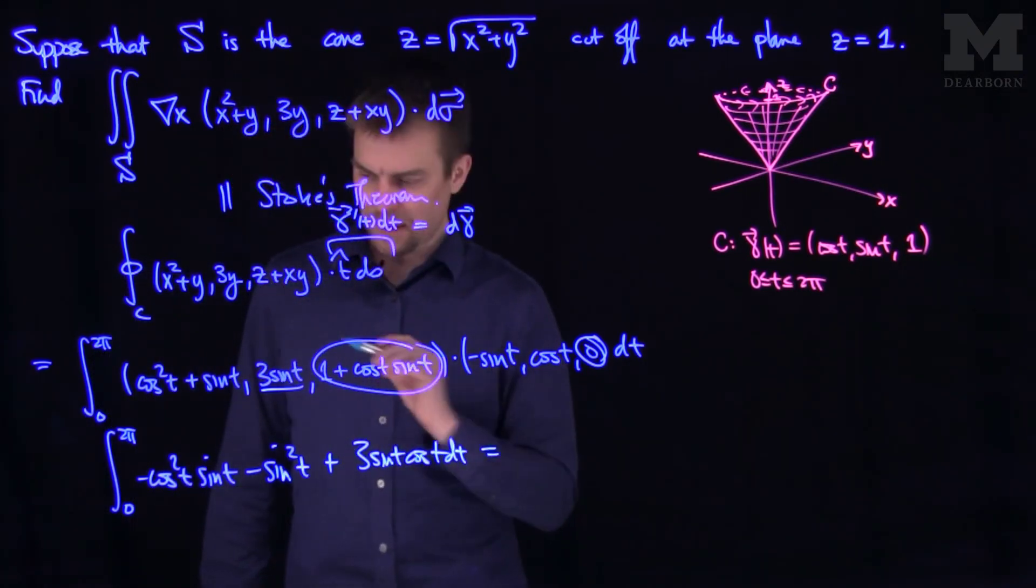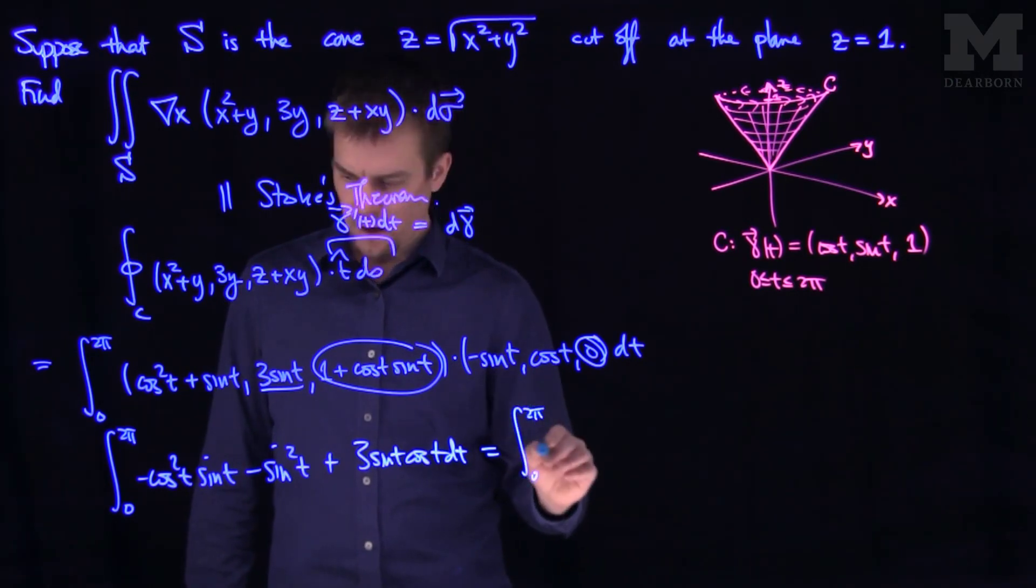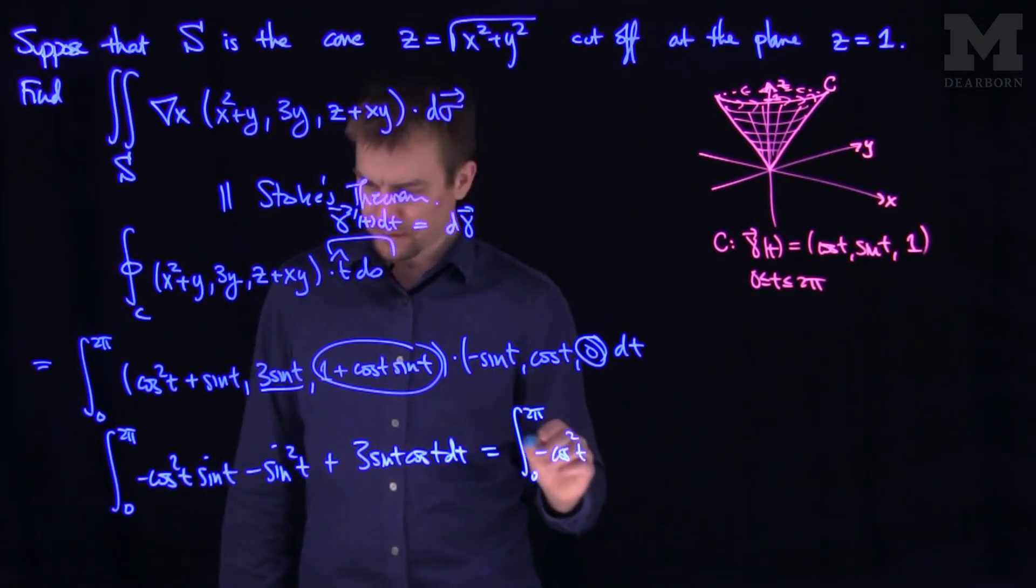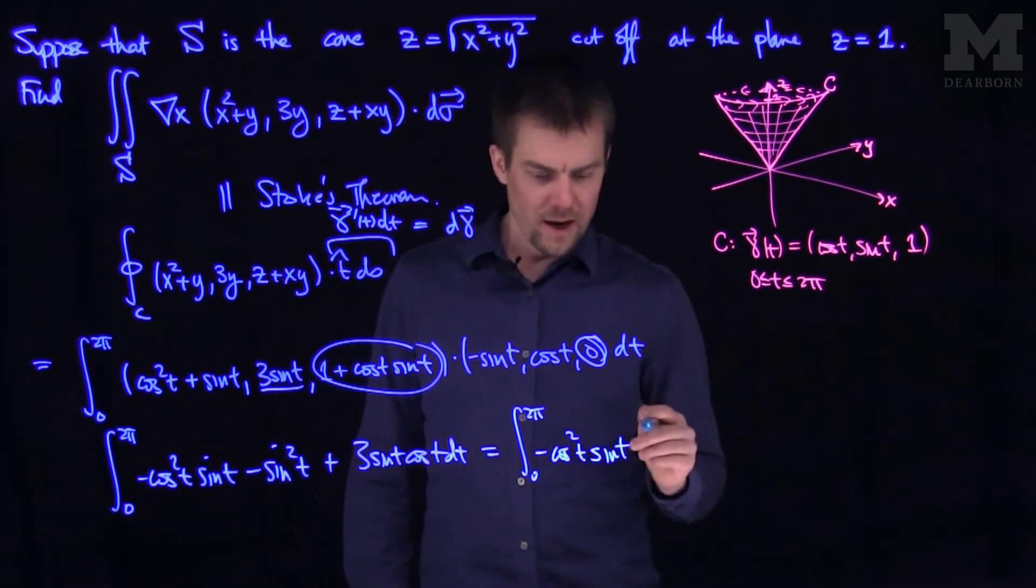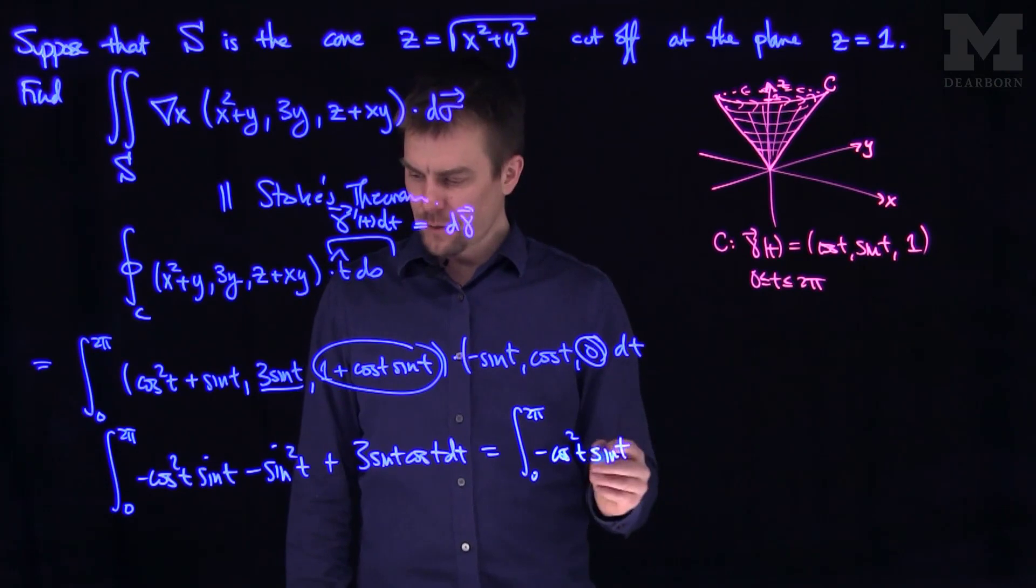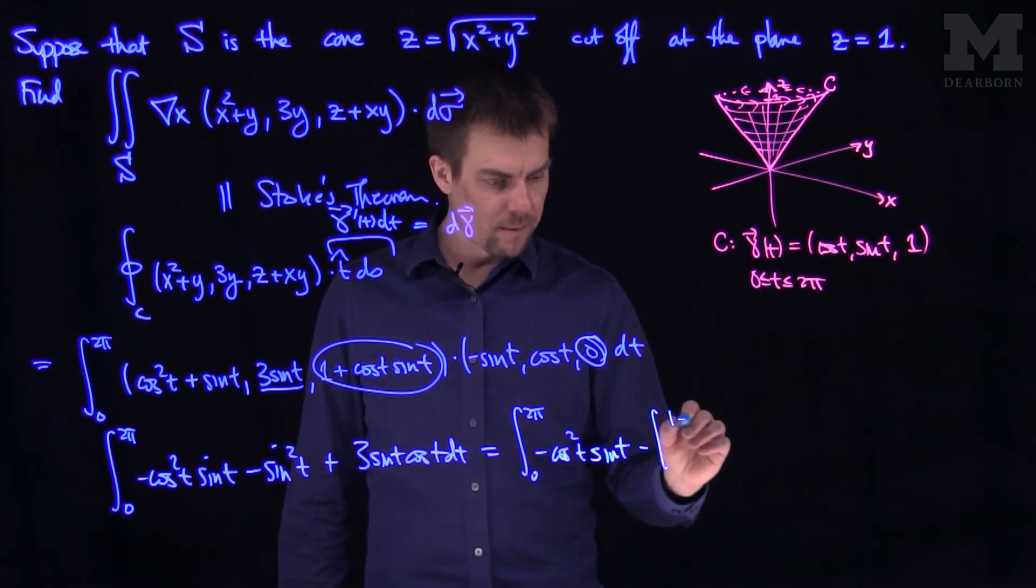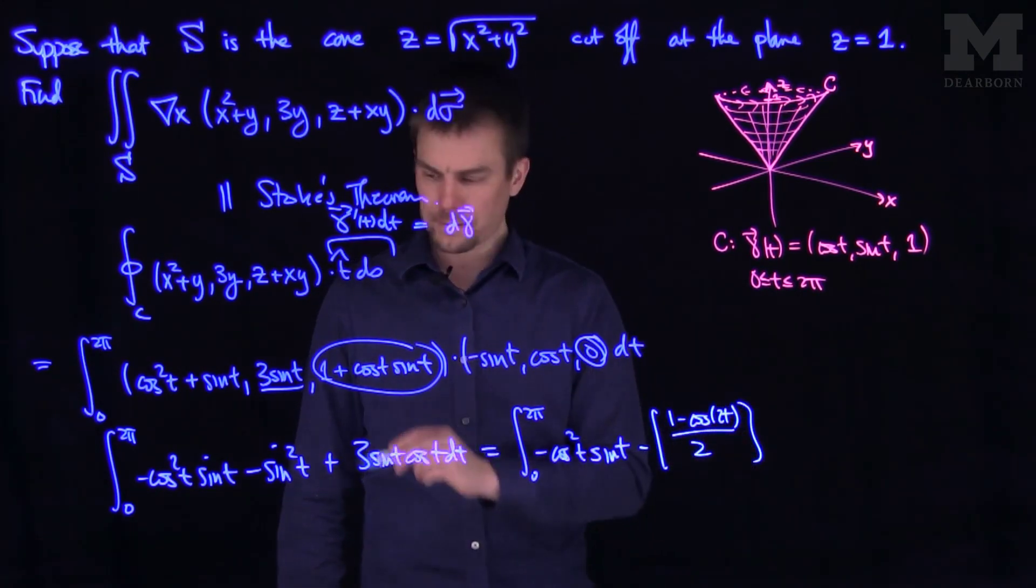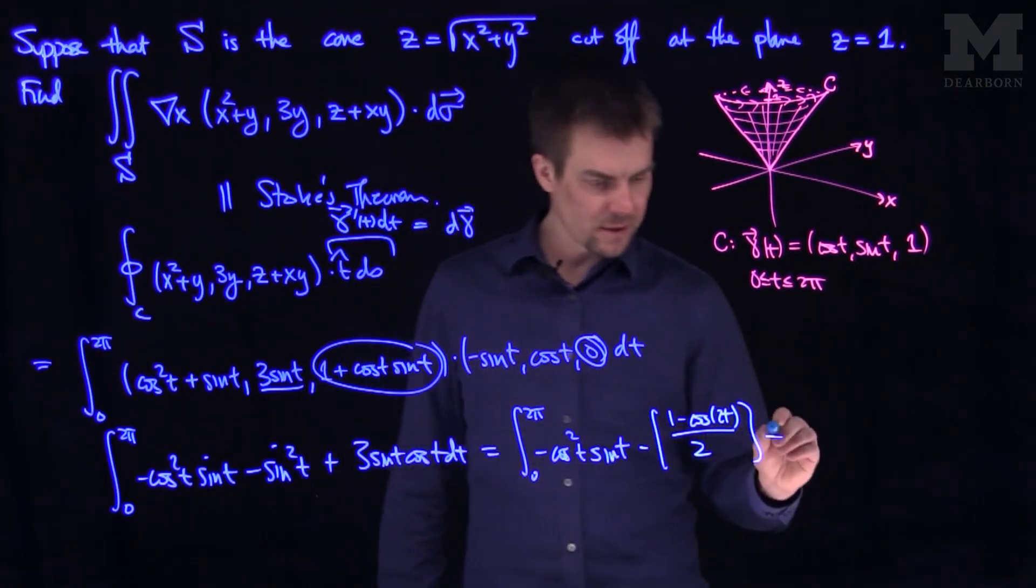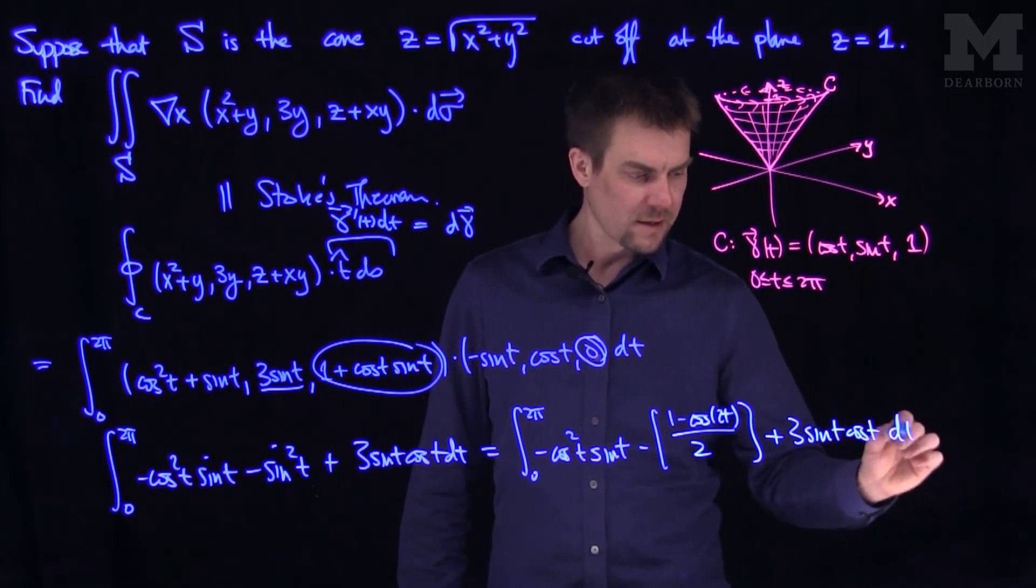We'll do one final step over here. We're going to write this over here as the integral from 0 to 2 pi of negative cosine squared of T sine of T. And then we'll have negative sine squared, which I'm going to write as negative 1 minus cosine of 2T over 2 by the power reduction formula. And then I have plus 3 sine of T cosine of T dt.